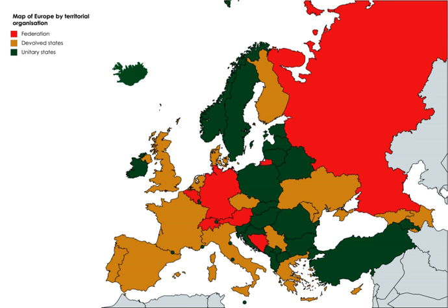Reasons for federal government growth included the need to regulate businesses and industries that span state borders, attempts to secure civil rights, and the provision of social services. From 1938 until 1995, the U.S. Supreme Court did not invalidate any federal statute as exceeding Congress's power under the Commerce Clause. In 1995 the Supreme Court rejected the Gun-Free School Zones Act in the Lopez decision, and also rejected the Civil Remedy portion of the Violence Against Women Act of 1994 in the United States v. Morrison decision. The Commerce Clause was also interpreted to include marijuana laws in Gonzales v. Raich.